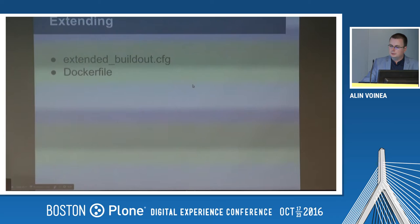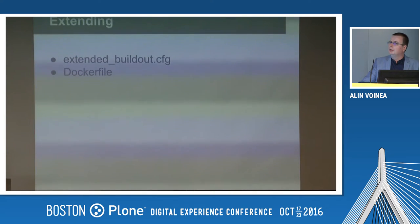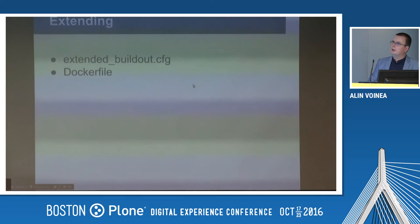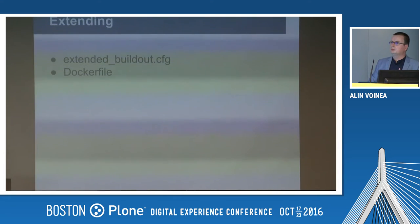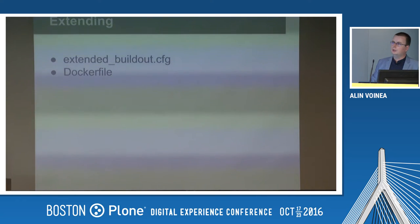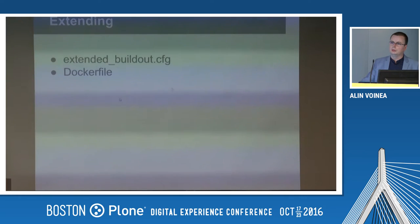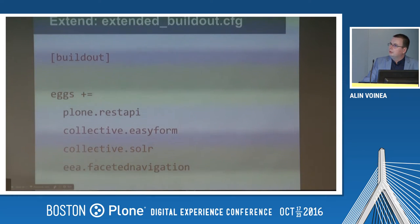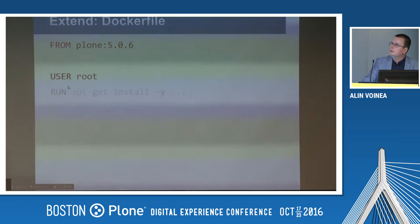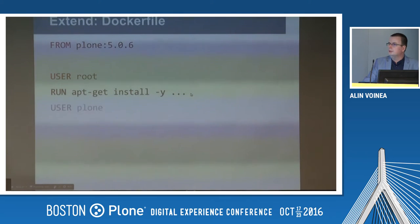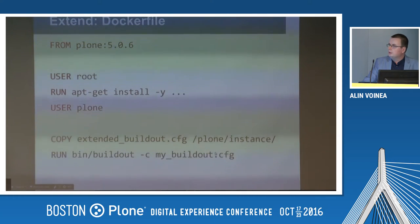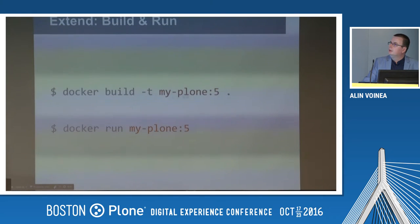How do you extend this image? You shouldn't abuse the add-ons environment variable, because when you do that and your container is first created, it will re-run the buildout. You should test that way, but in production you should create your own Docker images. So you have your buildout config, put your eggs there, create your Dockerfile starting from the Plone version, switch to root user, install system dependencies, copy and extend the buildout, and then run buildout.